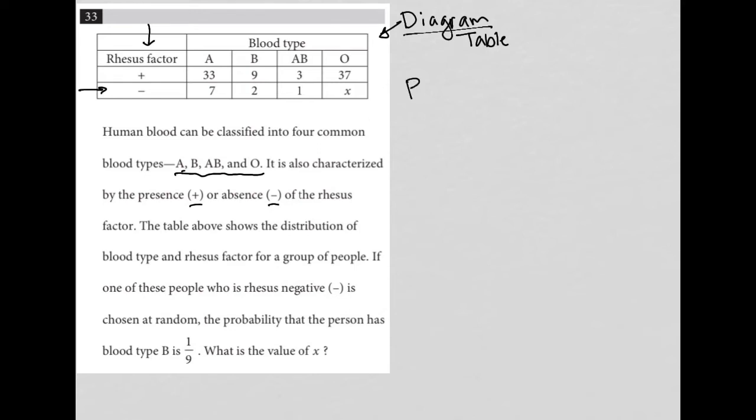So first of all, anytime I see this word probability, I immediately think of a fraction. And it's what you want is the numerator. What do you want? And the total, so basically out of how many do you have to choose from, is the denominator.